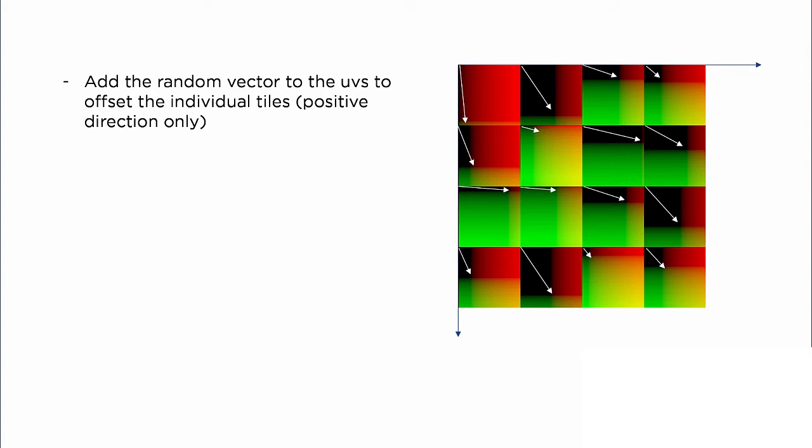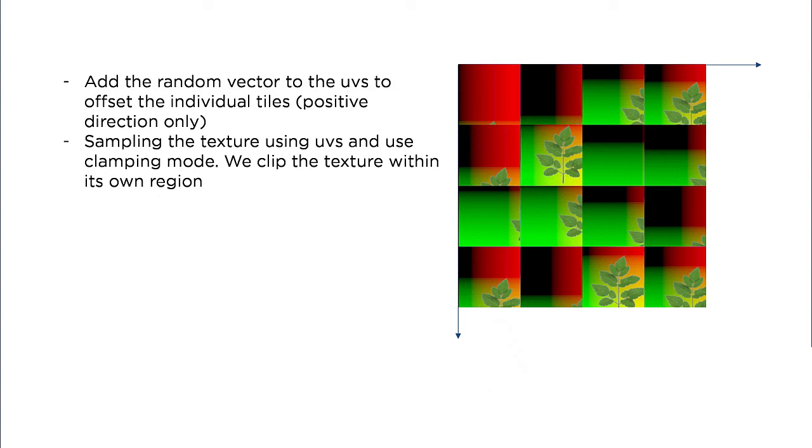Also, when we sample the texture in each region, we want to use the clamp texture sampling mode to clip the texture within each tile and not have it repeat. Otherwise, we'd see it repeat within its own tile.